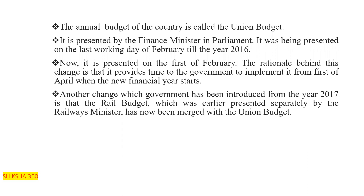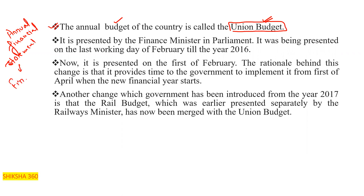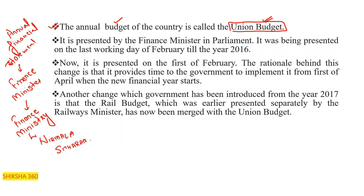The annual budget of the country is called the Union Budget, or we can say the annual financial statement. This statement is given by the Finance Ministry. The budget is prepared by the Finance Ministry, and it is represented by the Finance Minister in Parliament.